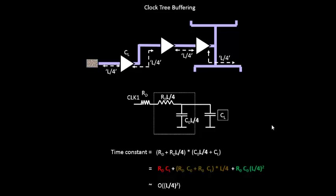Now we are gaining even more. The time constant, or the time required for the signal to travel from one point to the next, is now proportional to L²/16. So we are gaining even more. This is the buffering problem and how we solve it.